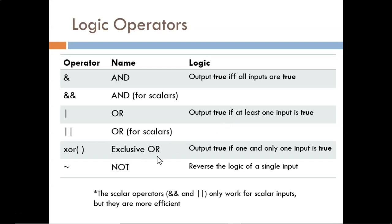For exclusive OR, one and only one input can be true in order for the output to be true. The NOT operation is different in that it accepts only one input value. It then simply reverses the logic of that input.